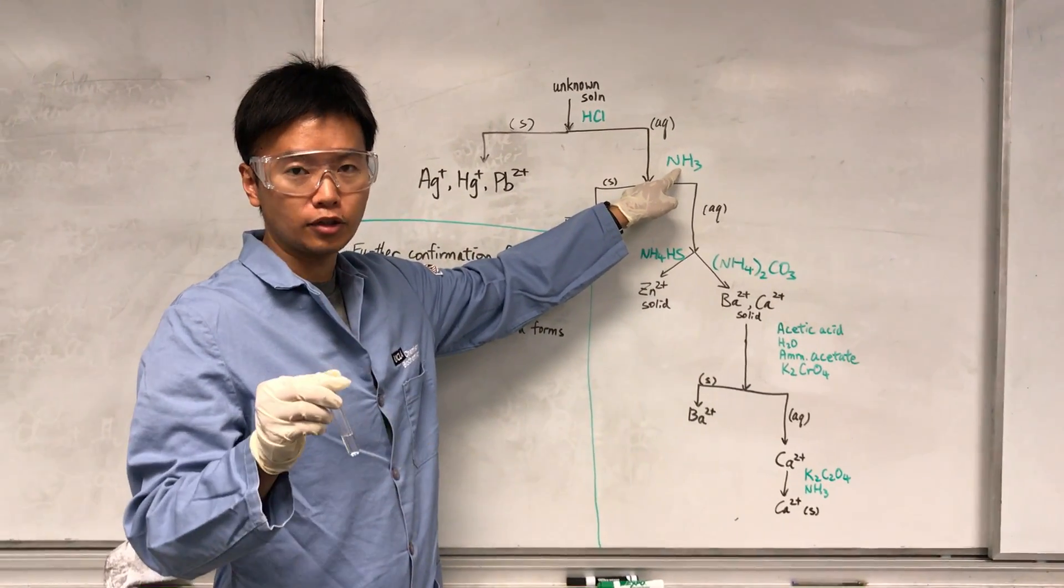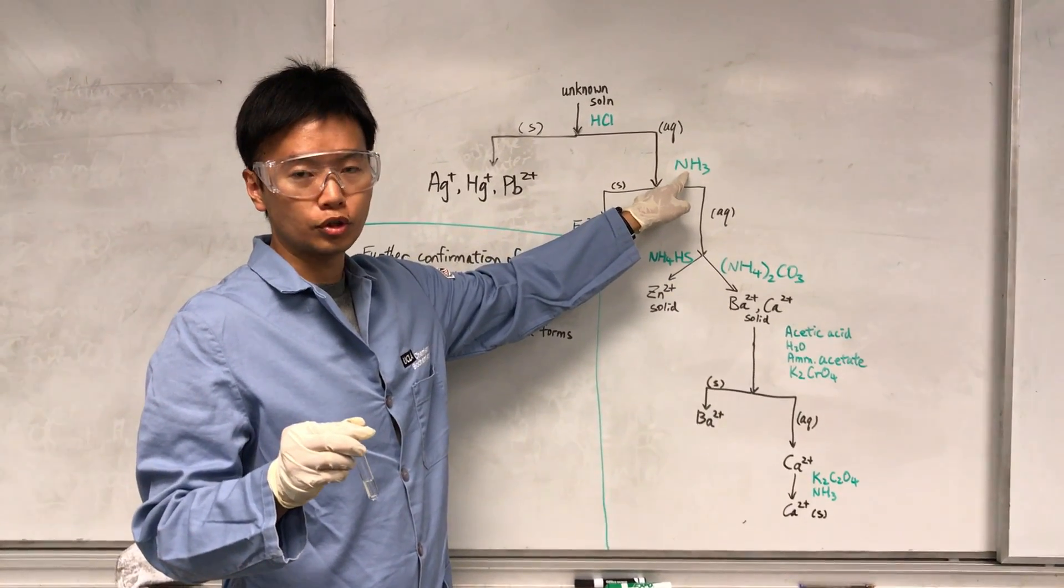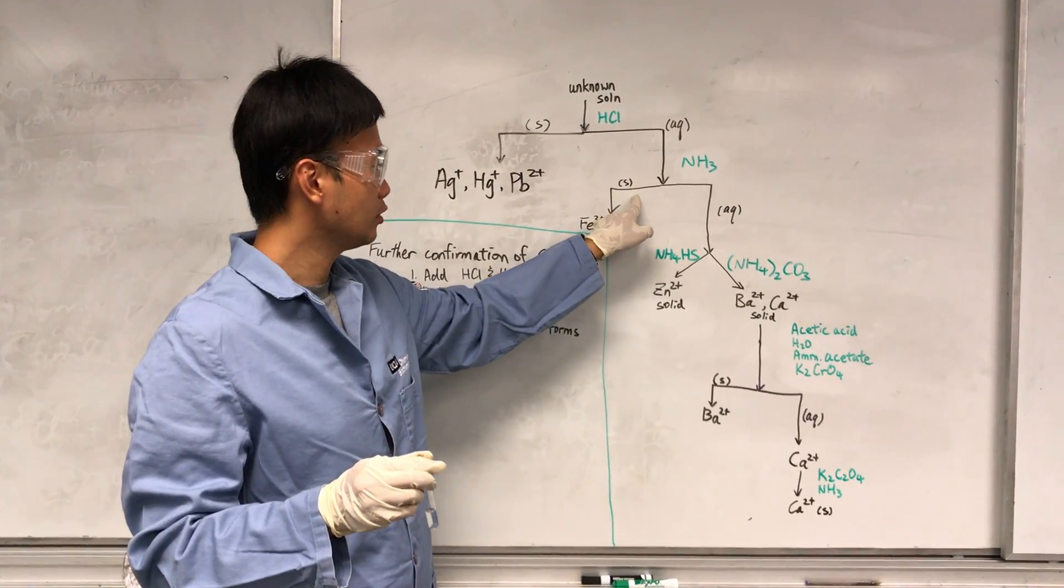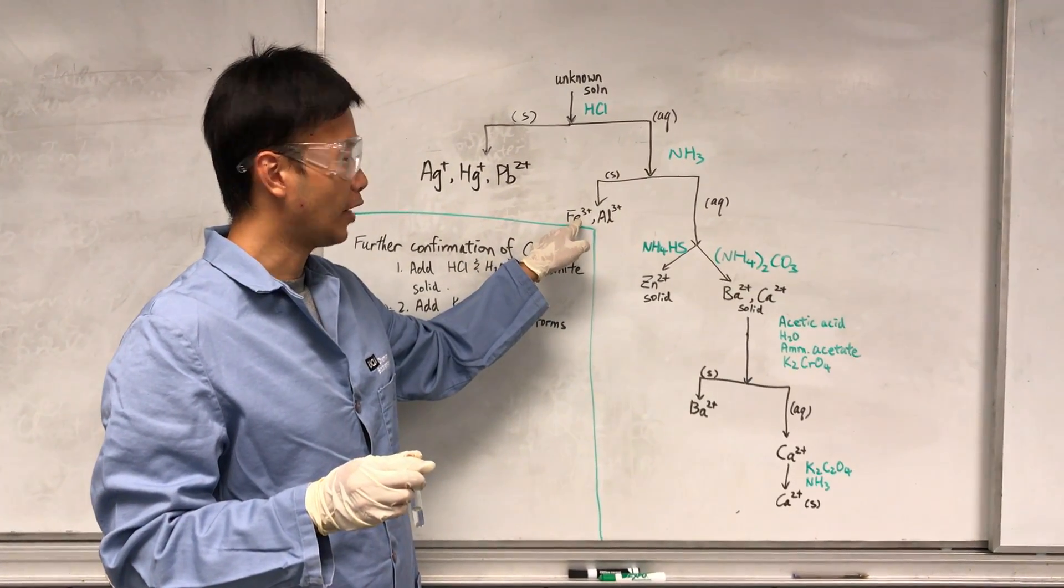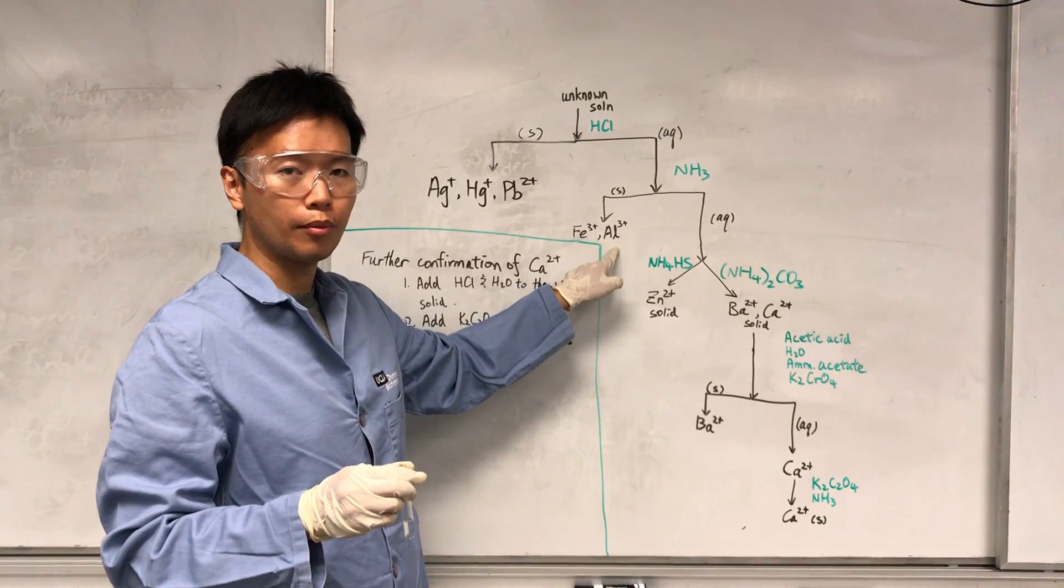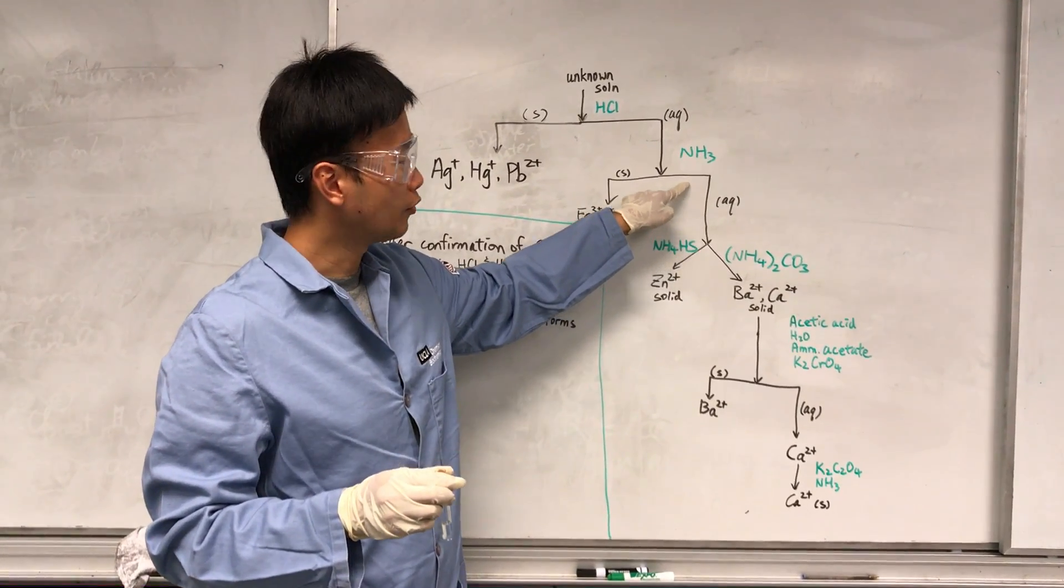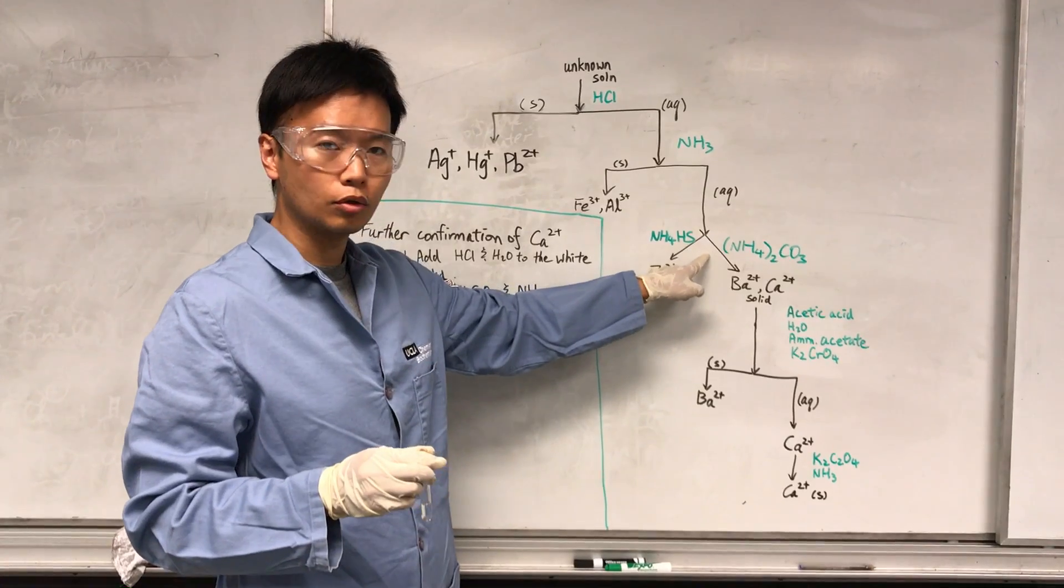Then I'm going to start adding NH3 to make sure the solution is basic and see if I see any solid. If I see any solid, that means I have Fe3+ or aluminum 3+. If I don't see any solid form, then I will continue to the next step.